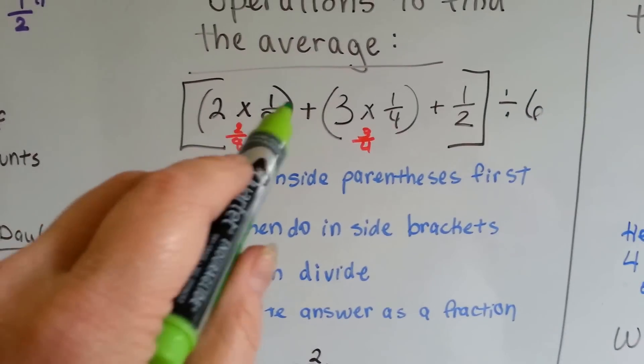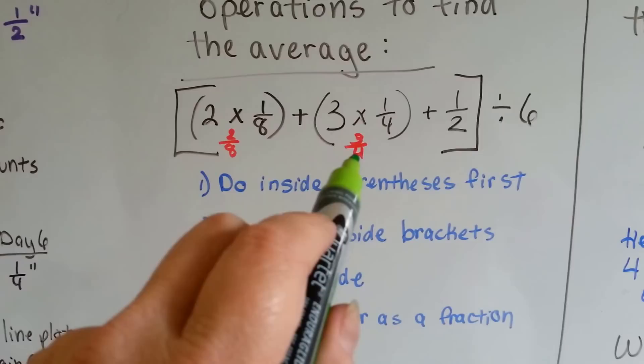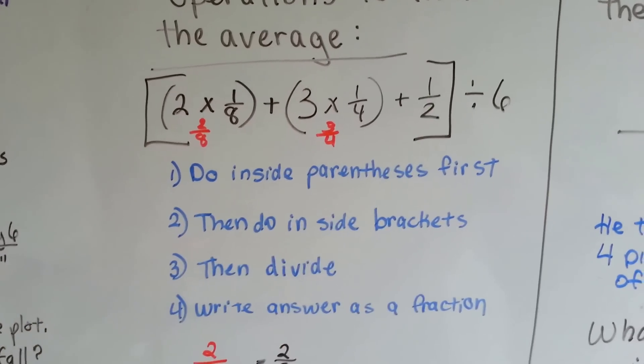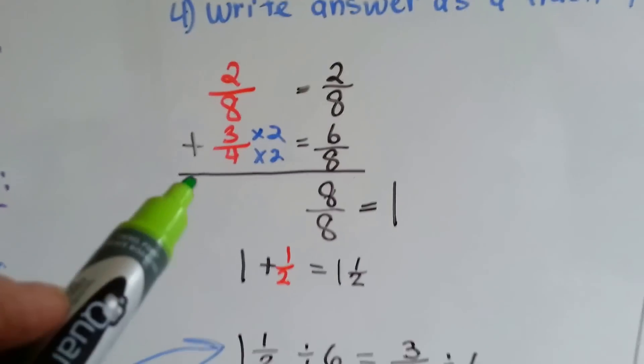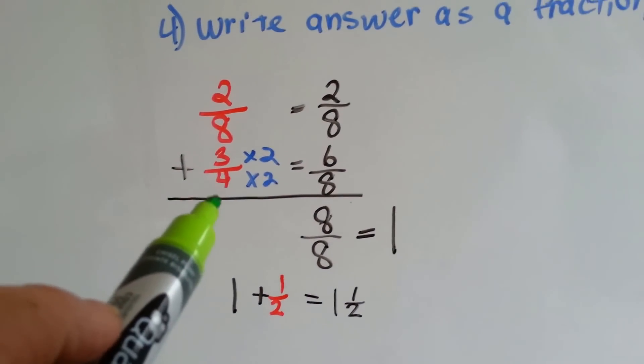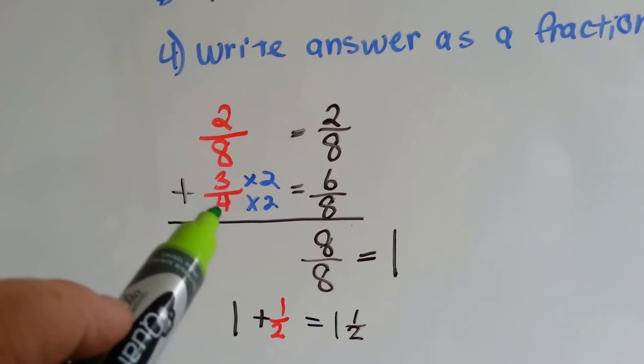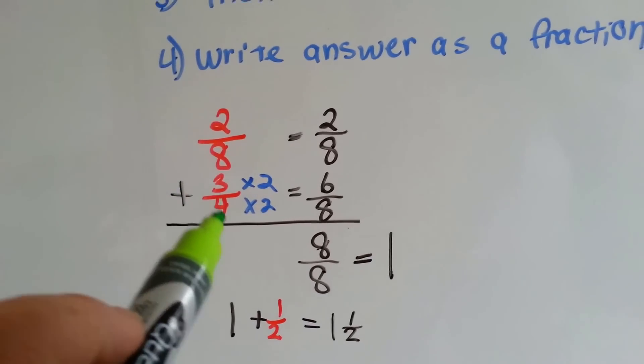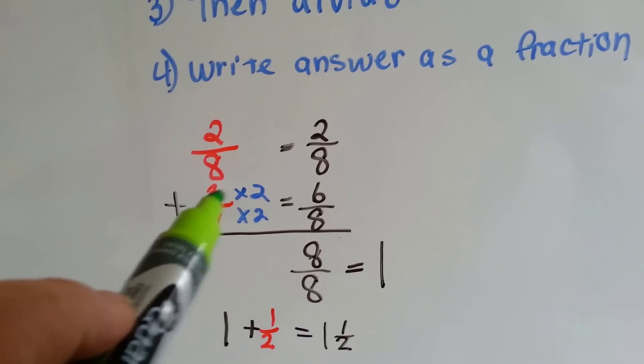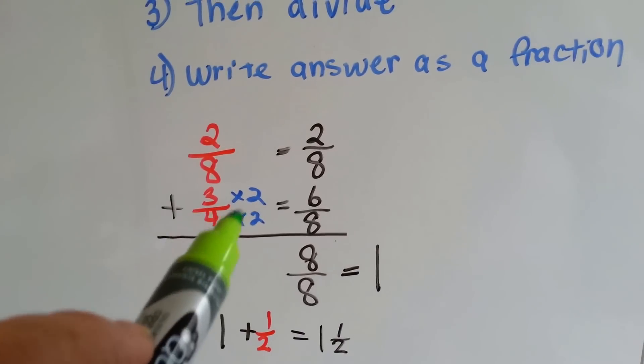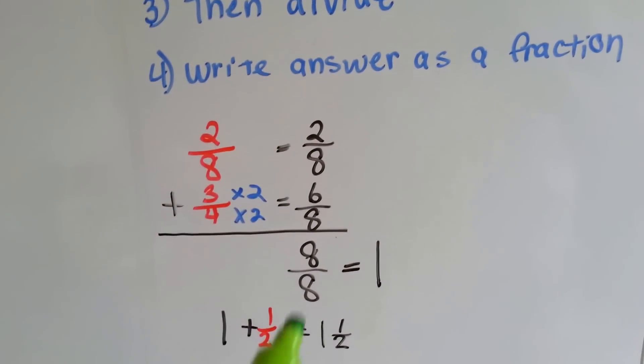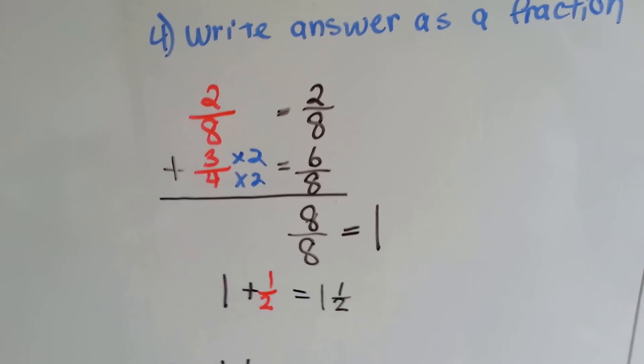So, two times one-eighth is two-eighths, three times one-fourth is three-fourths, and we need to add the half-inch. When we add the two-eighths and three-fourths, we need to find a common denominator so they meet at eight's house. Four times two is eight. So, three gets jealous. It wants to be multiplied by two also. So, we end up with two-eighths plus six-eighths, which equals eight-eighths. That's one.